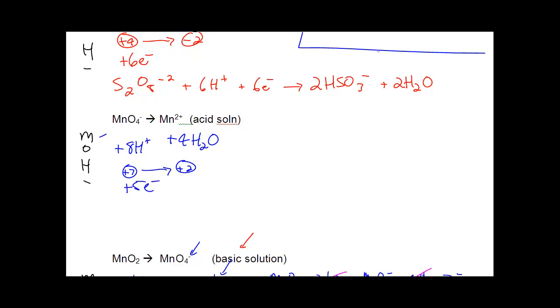So, this all balanced is MnO4- plus eight H+ plus five electrons goes to Mn²+ plus four H2O. So, that's the final answer.